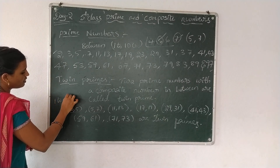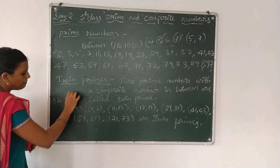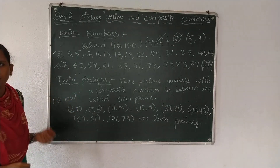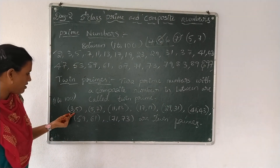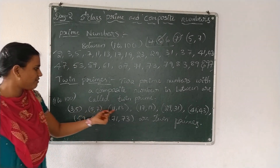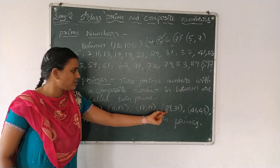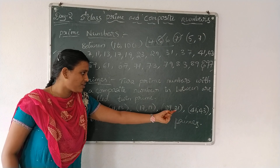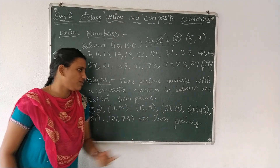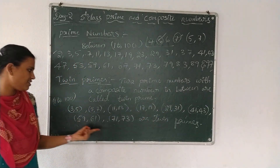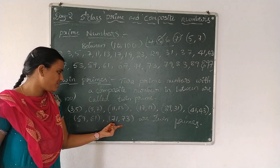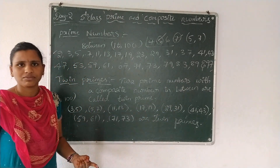Twin prime numbers between 1 to 100 are: 3, 5, 5, 7, 11, 13, 17, 19, 29, 31, 41, 43, 59, 61, 71, 73.